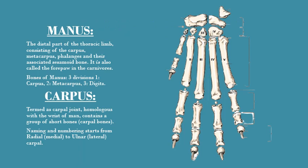Assalamualaikum, welcome to Vetlek. Today I am going to discuss the anatomy of carpal bones and metacarpal bones of dog. In the case of dog, the carpal bones, metacarpal bones, and digits are collectively termed as the manus of dog. These three parts — carpus, metacarpus, and digits — form the distal aspect of the forelimb collectively.